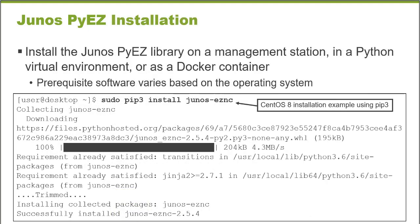This example installs Junos PyEZ on a CentOS workstation. I'm using Python version 3, and Junos PyEZ will work with either Python 2 or Python 3. I'm using the pip3 utility because it's Python 3. The package name is junos-eznc — this is the name of the Python library that pip will pull from the Python Package Index, and it installs Junos PyEZ locally on this workstation. It can also be installed in a Python virtual environment or as a Docker container.